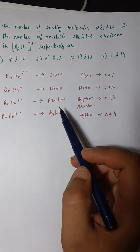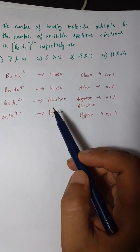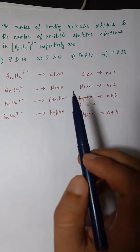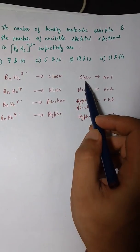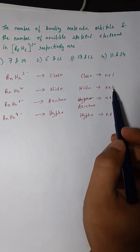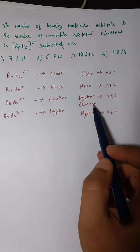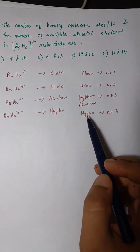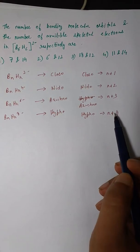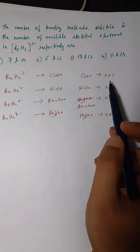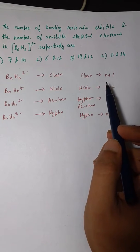To find the skeletal electron pairs: for Closo it's N+1, for Nido it's N+2, for Arachno it's N+3, and for Hypo it's N+4, where N is the number of boron atoms present.